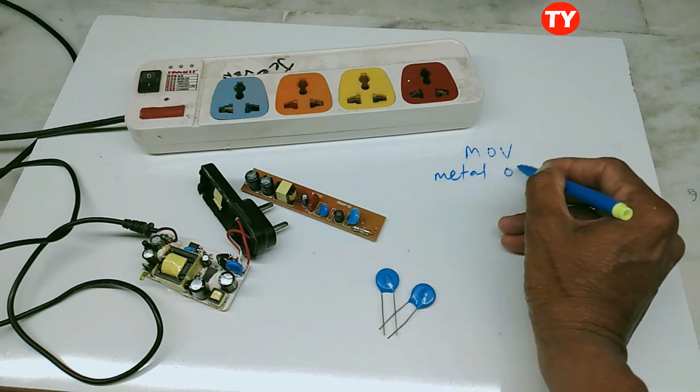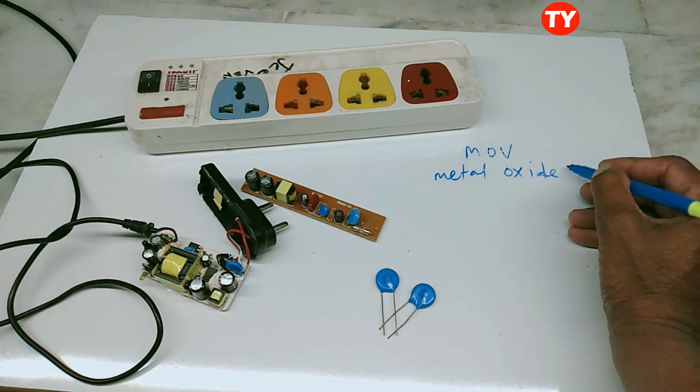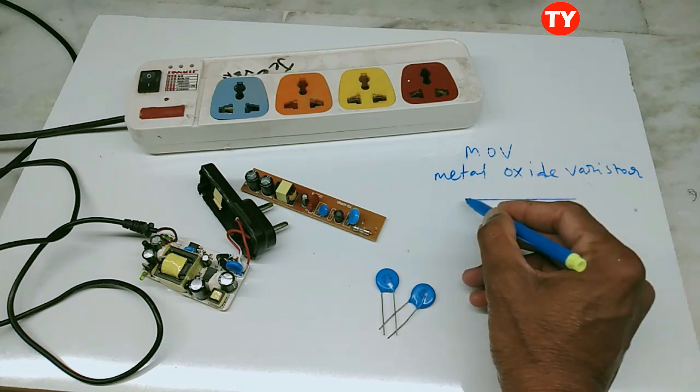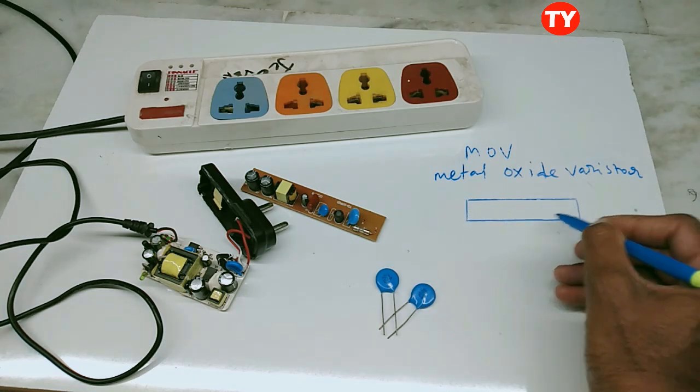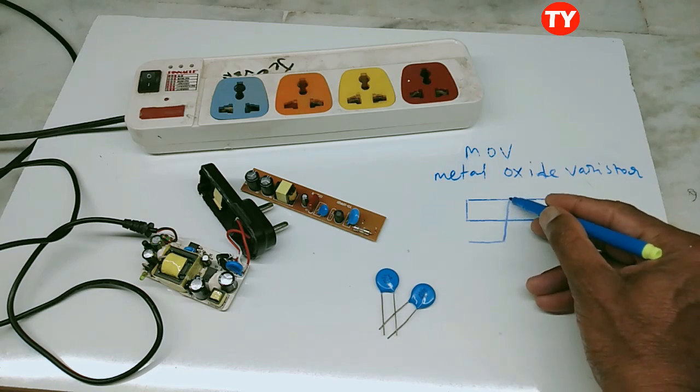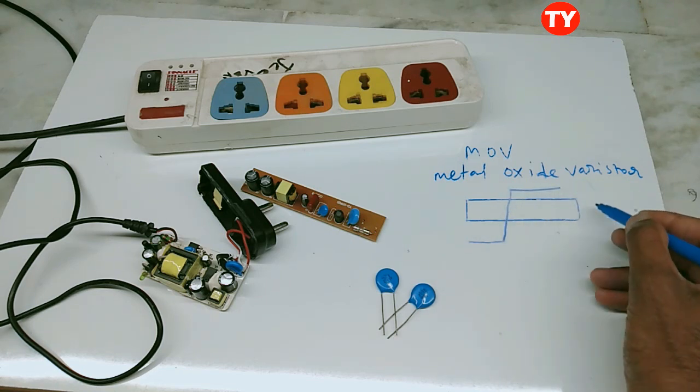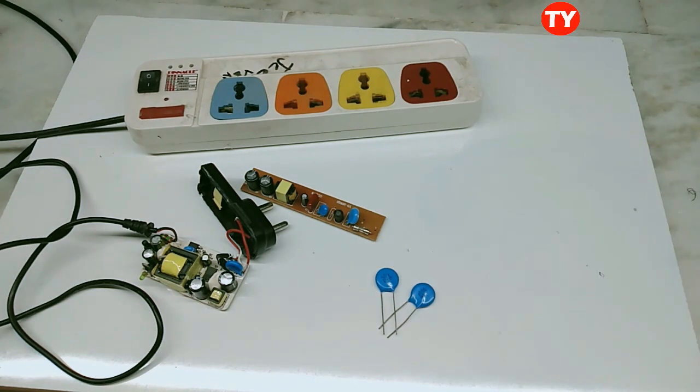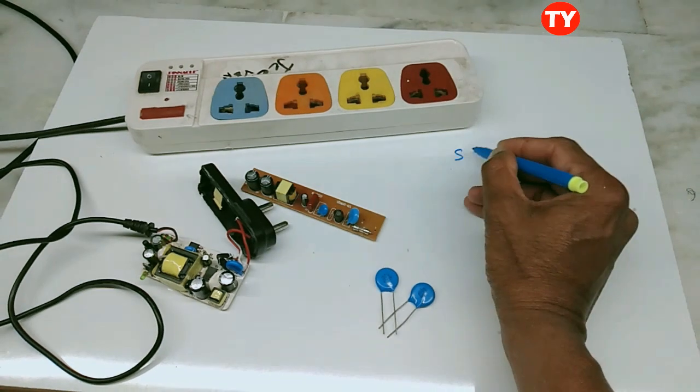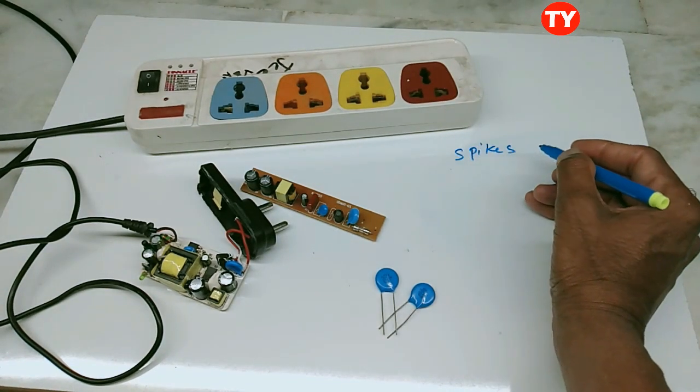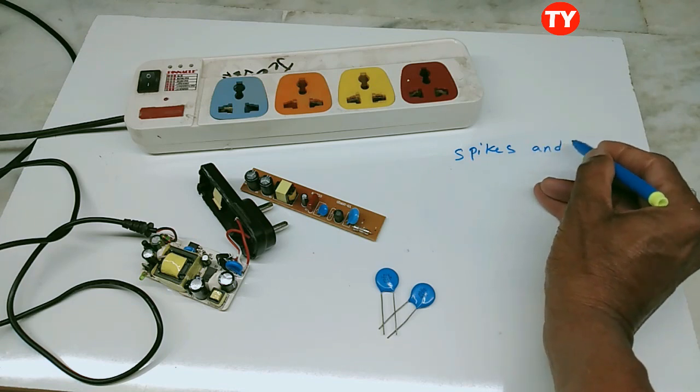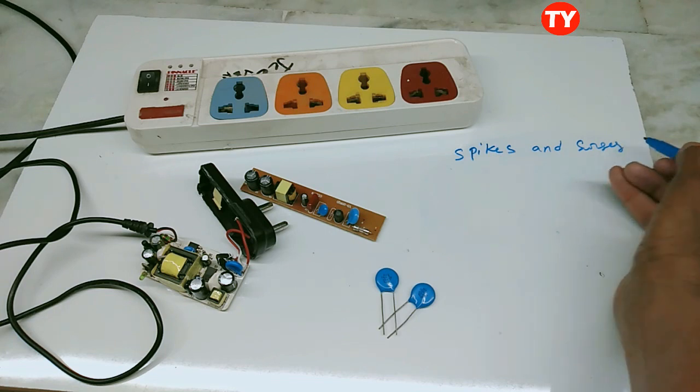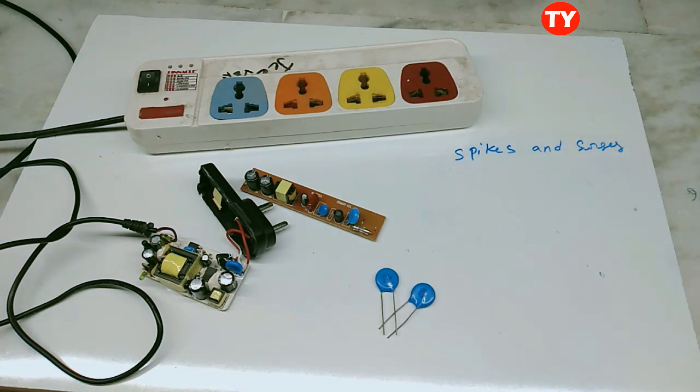MOV stands for Metal Oxide Varistor. This is the symbol of a varistor. Now I am discussing about spikes and surges. Spikes are very high voltage current for a very small time.